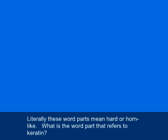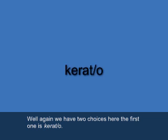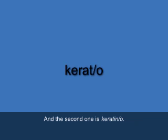Next, we have a word part that refers to keratin — literally meaning hard or horn-like. We have two choices: the first is KERAT/O — K-E-R-A-T slash O — and the second is KERATIN/O — K-E-R-A-T-I-N slash O. These combining forms mean hard or horn-like, but we use them to refer to keratin, which is a component of the skin.